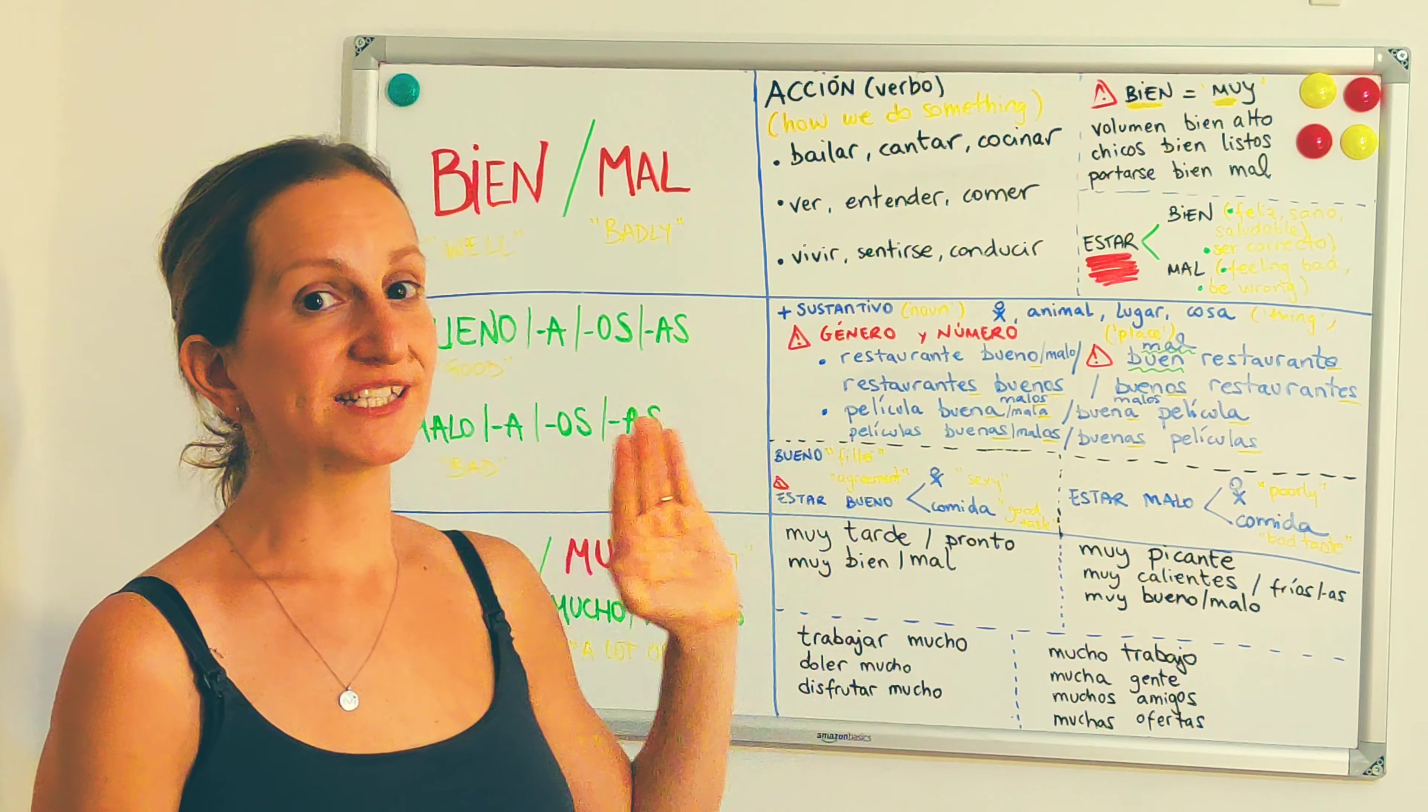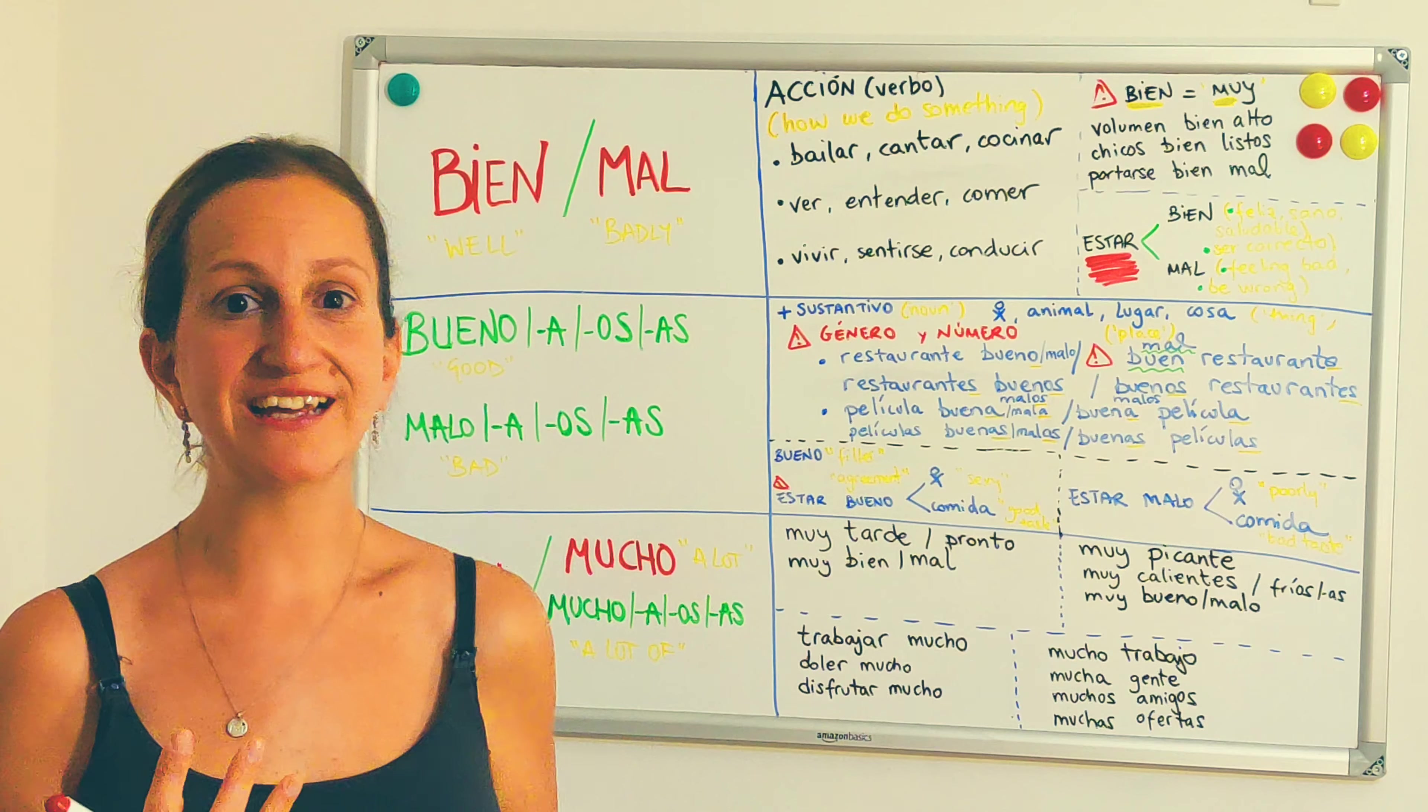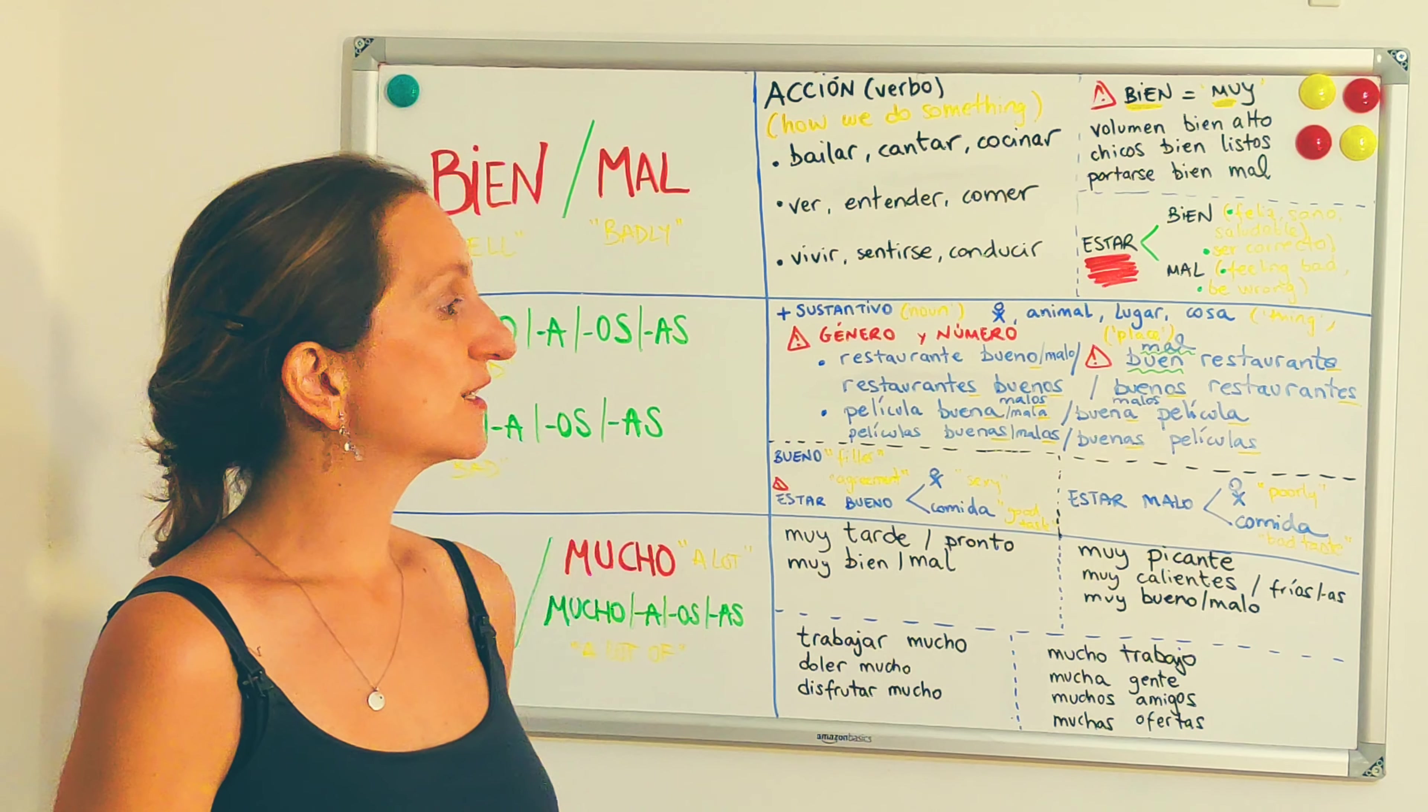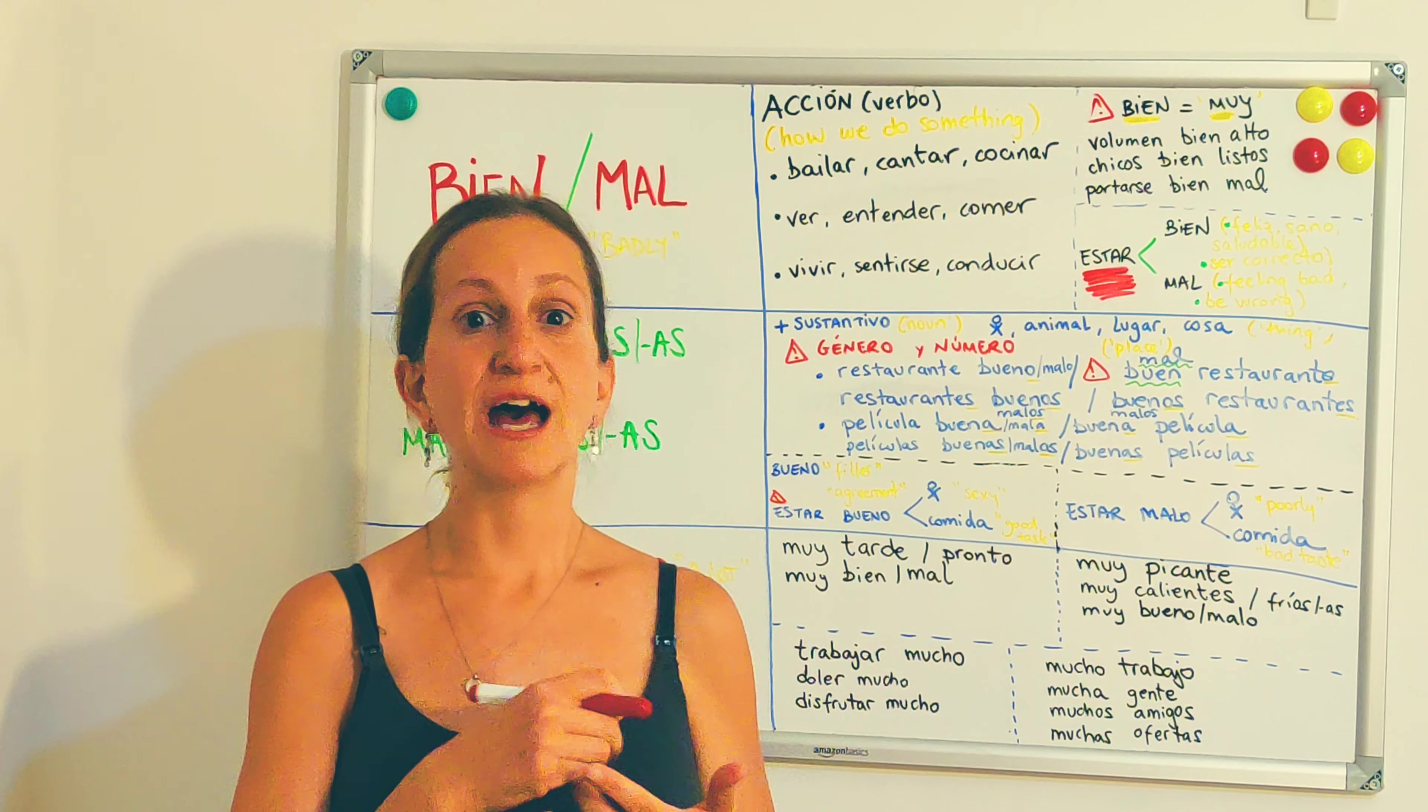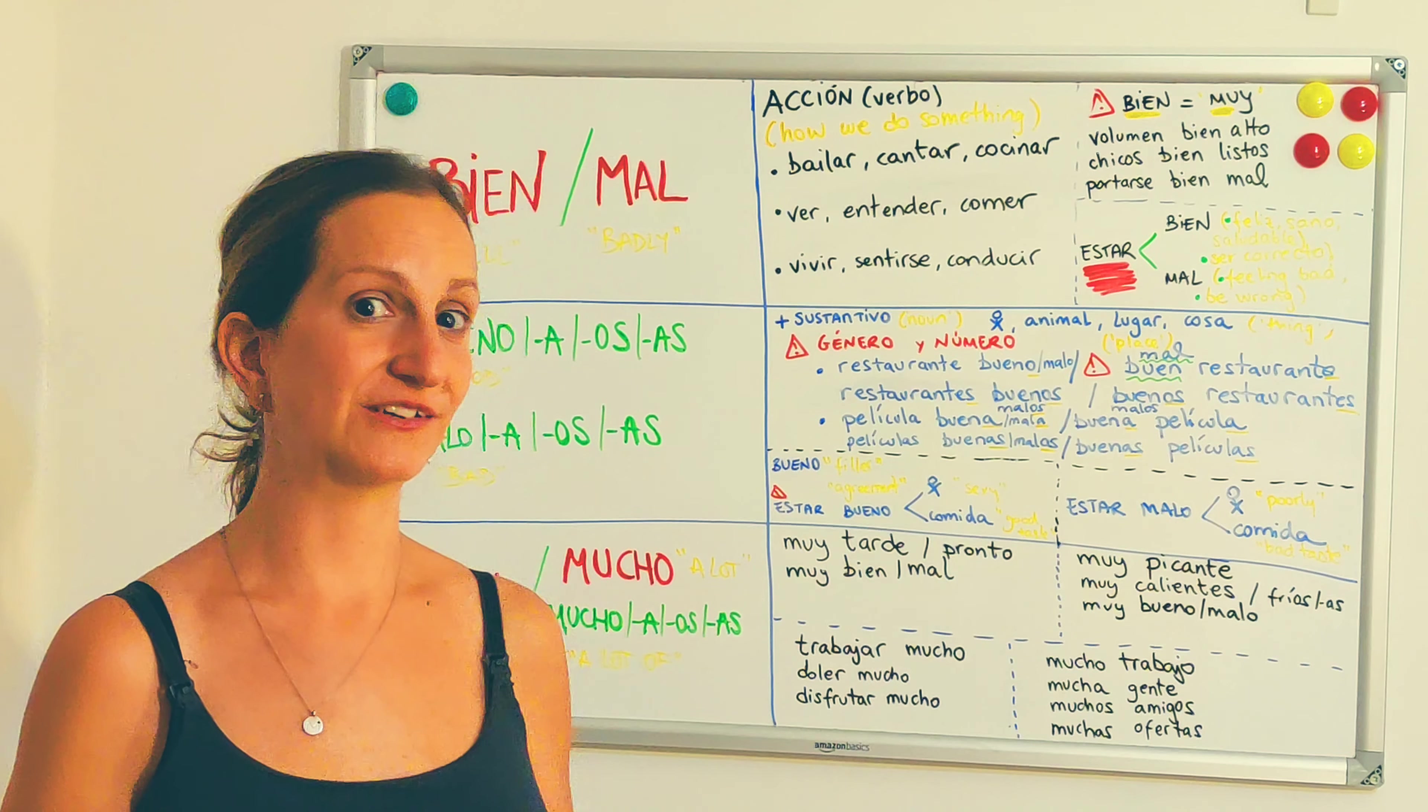Estar, the verb estar, to be. To be well. Estoy bien, I'm happy, feliz, estoy sana, saludable, healthy. Or if something is right, for instance, an exercise that you have to do, something is right. El ejercicio está bien. O el ejercicio está mal. O estoy mal, I'm feeling bad. Okay?